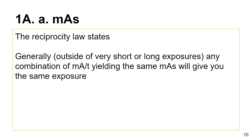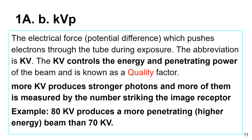Of course, you can only increase mA so much — maybe 300 or 400 stations; in CT you have about 1,000. You're also restricted by your filament — in other words, your focal spot when it comes to mA. In the lab, you may have noticed it'll switch automatically from a small to a large focal spot when you change to a certain technique.